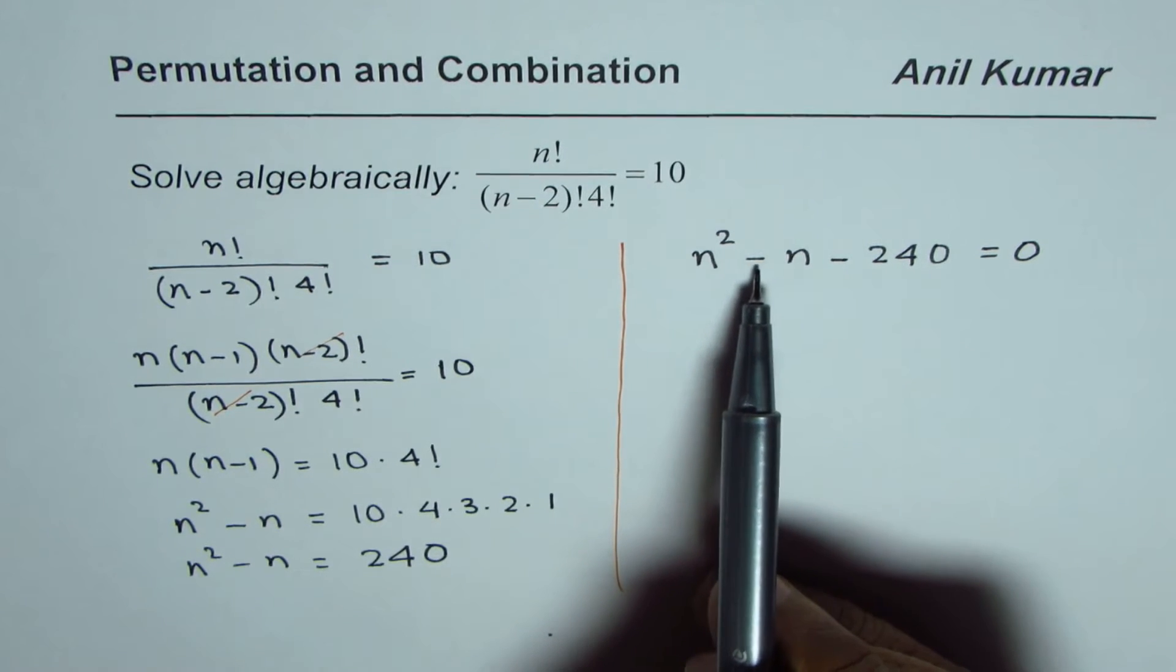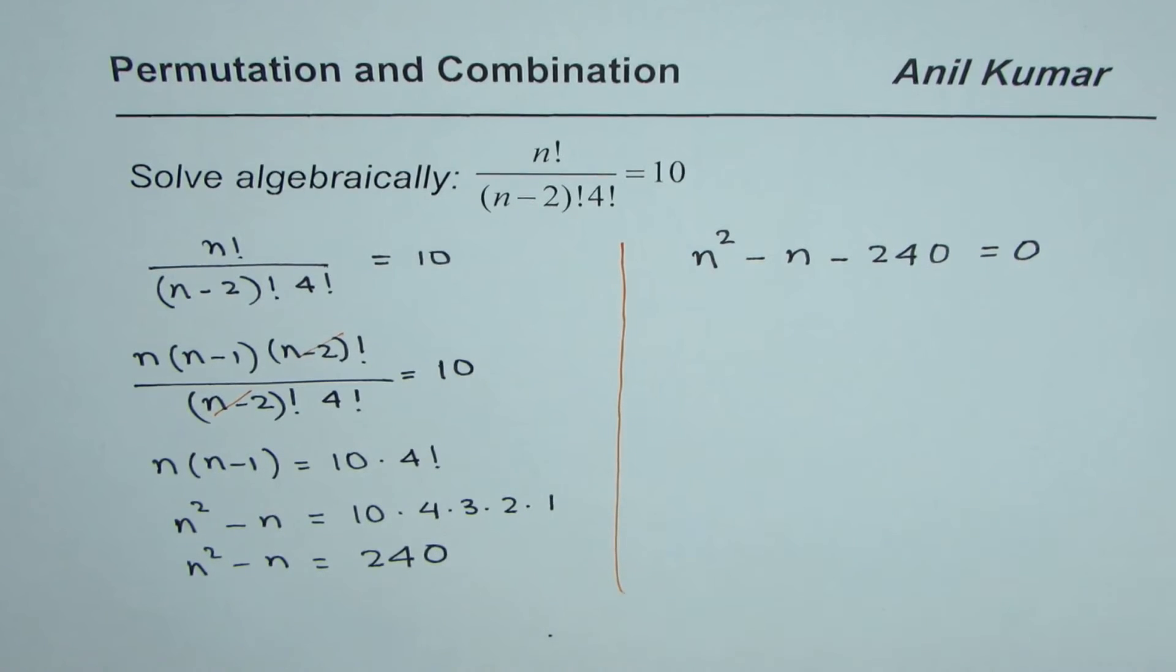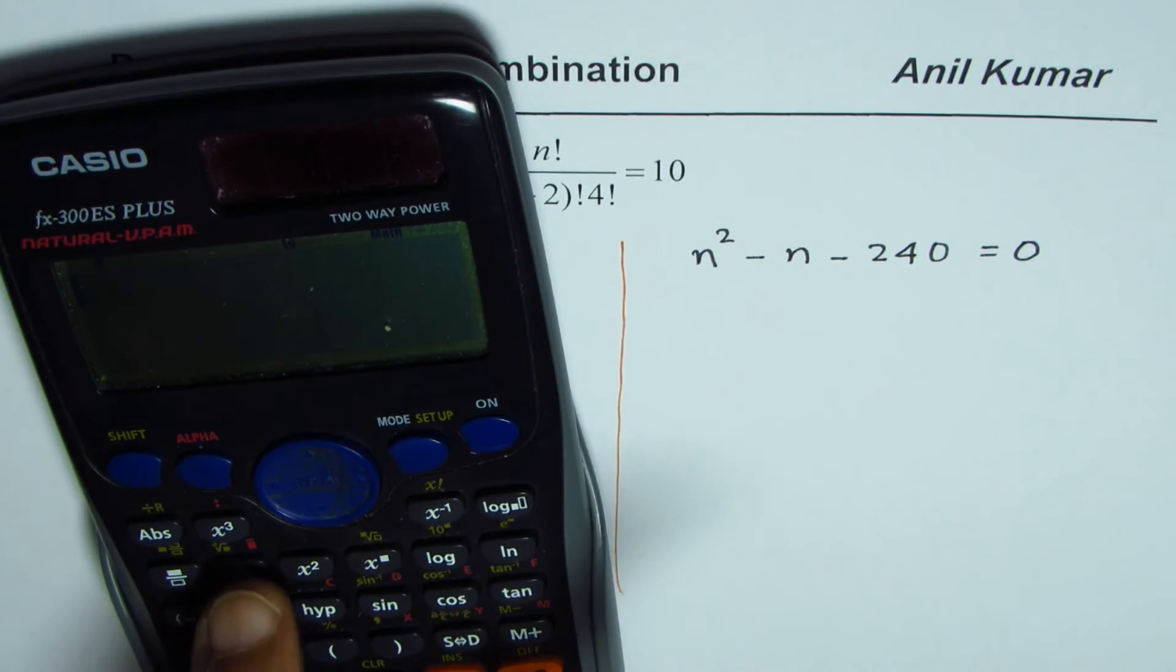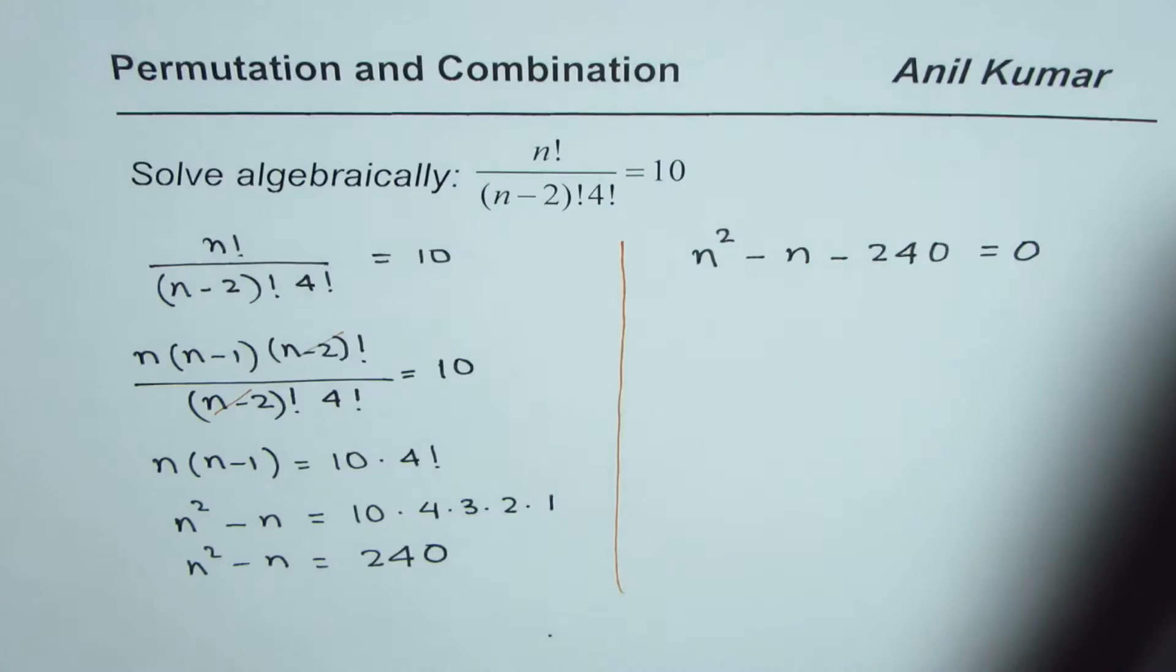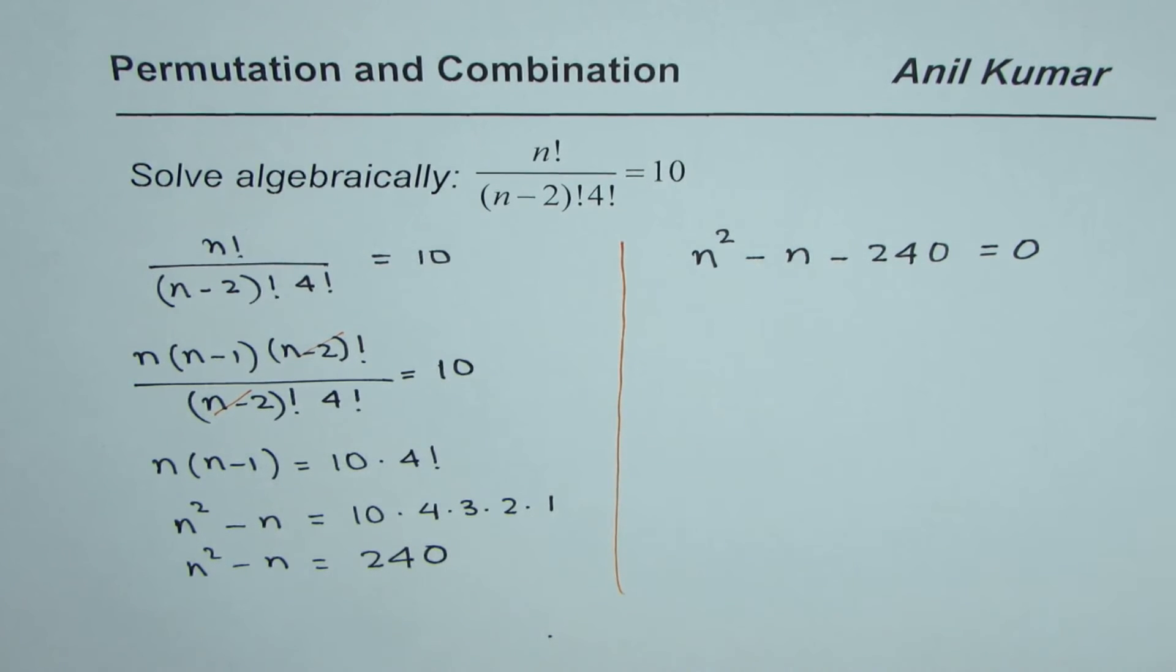Since this number is 1 that means the two numbers which were multiplied to give 240 should be very close. My method is find the square root of 240. When you find square root of 240 in decimals it is 15.4. That gives an indication that the numbers could be 15 and 16.